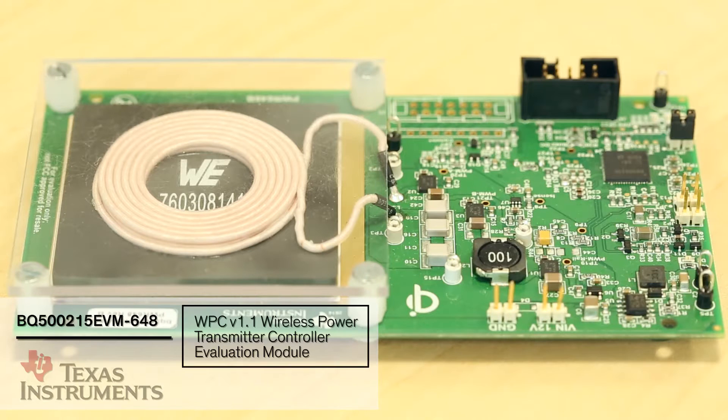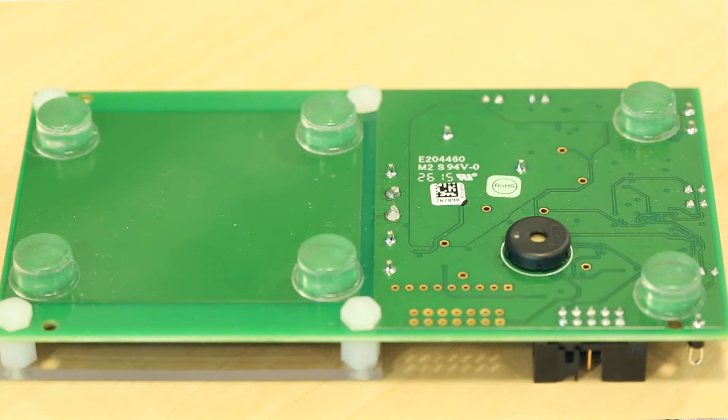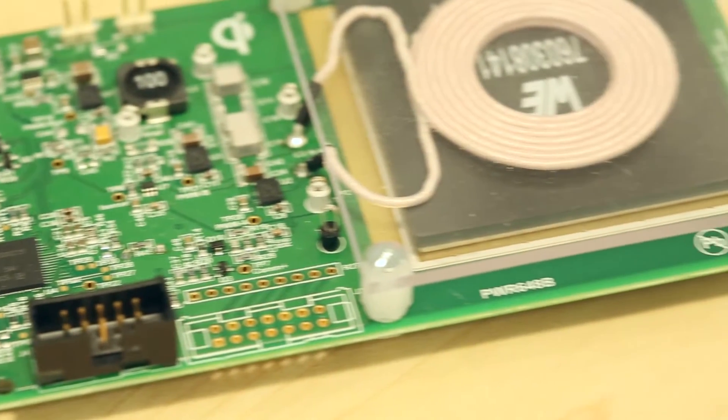Here is the evaluation board for the BQ500215 transmitter. The BQ500215 delivers up to 5 watts to a Qi compliant receiver. Additionally, it can output 10 watts using a non-standard implementation.